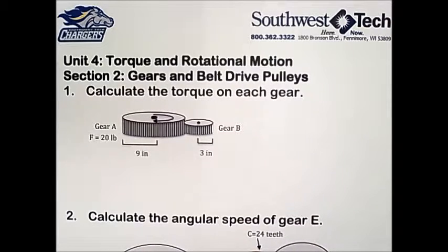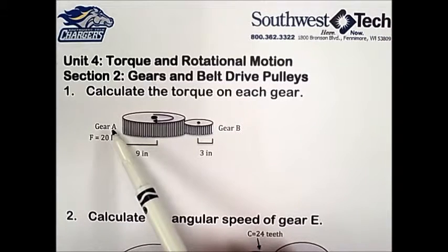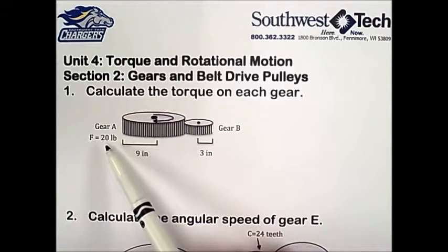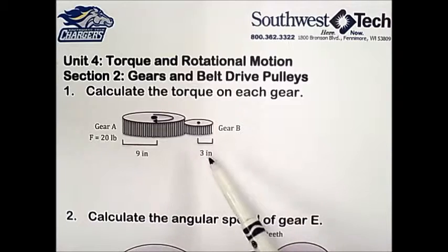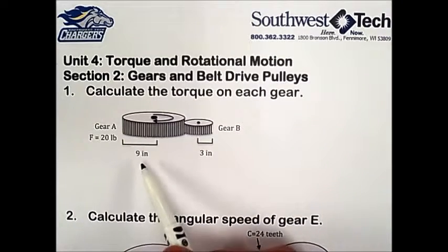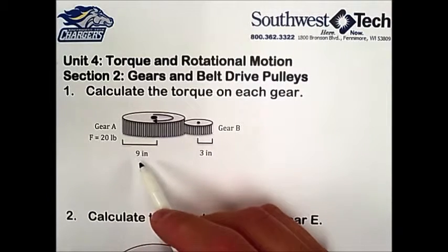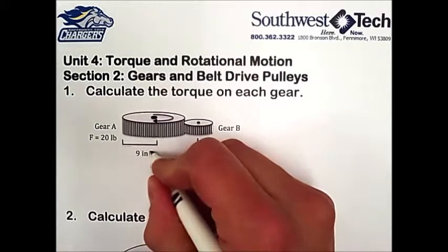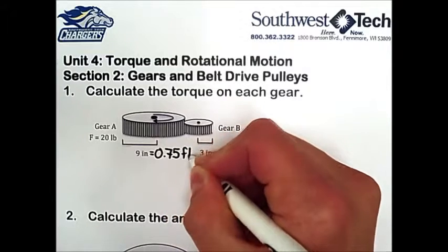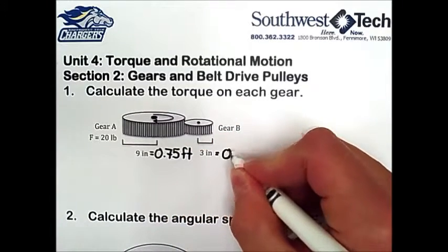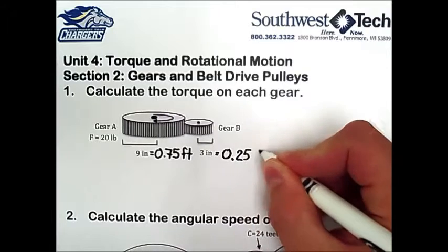Number 1: calculate the torque on each gear. In this problem we have gear A as the driver gear and a force of 20 pounds is acting on gear A. The radius of gear A is 9 inches and the radius of gear B is 3 inches. The first thing we need to do is convert these radii from inches into feet, so we divide each by 12. So 9 divided by 12 equals 0.75 feet and 3 divided by 12 equals 0.25 feet.